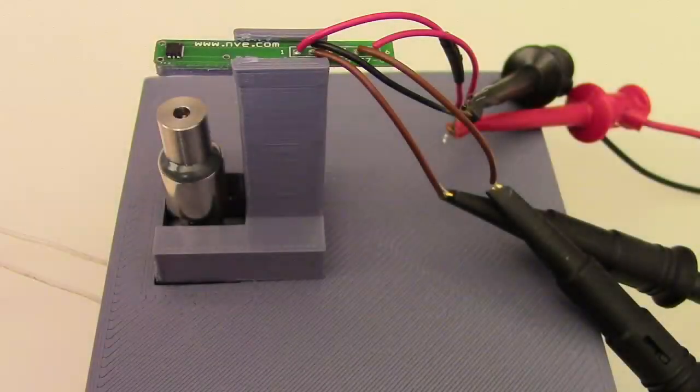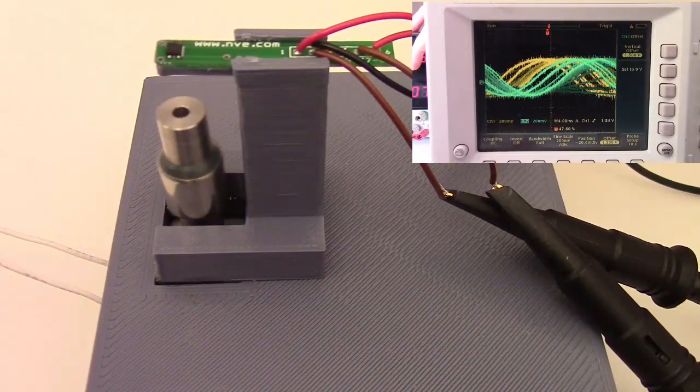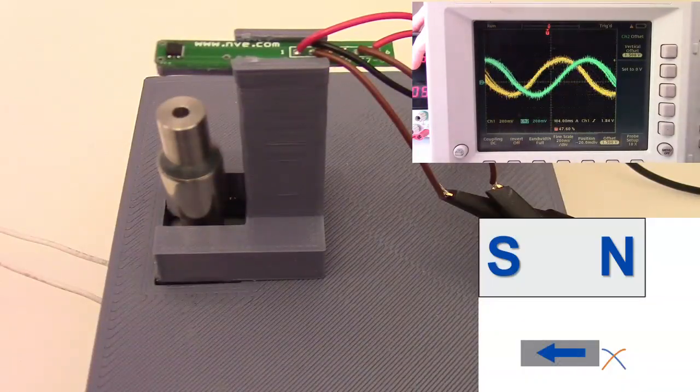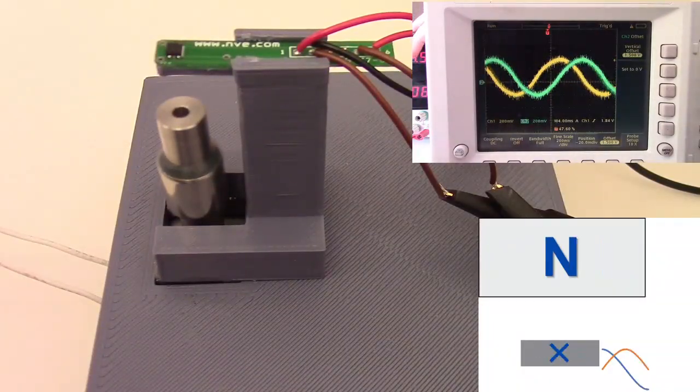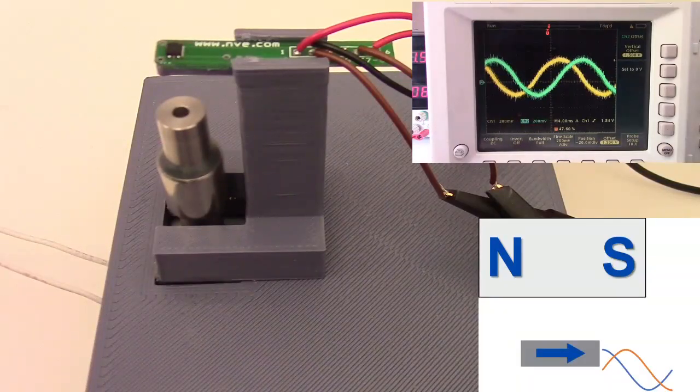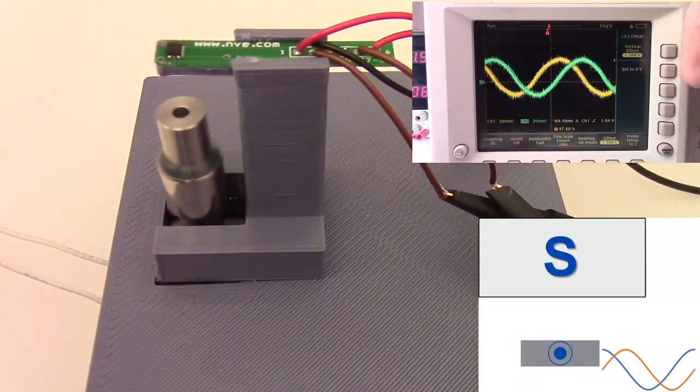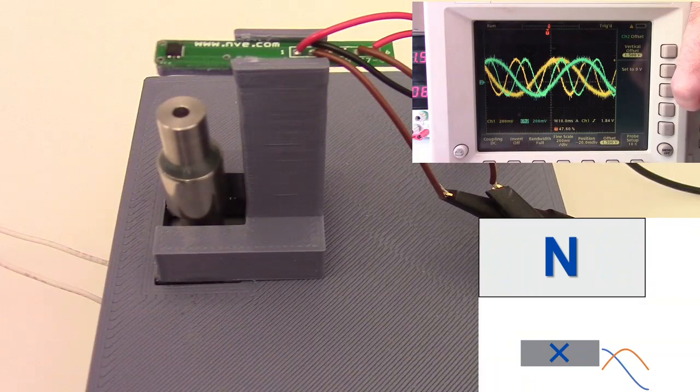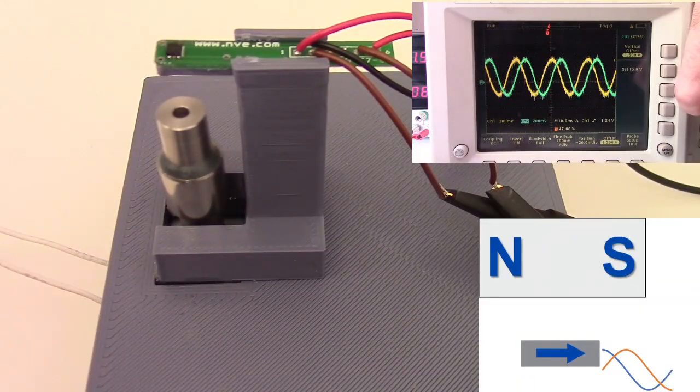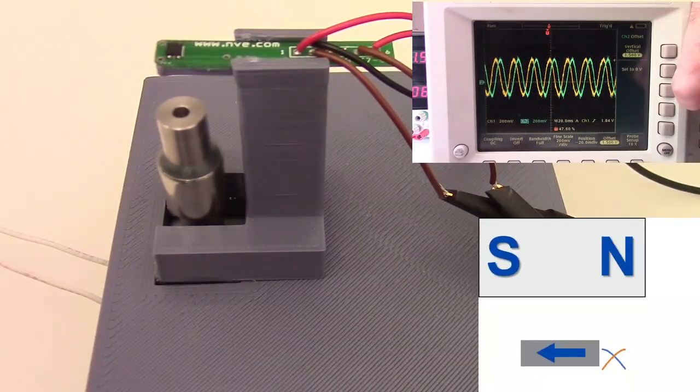We'll start with the sensor on the rotational axis in the standard configuration. The magnet is diametrically magnetized, so the magnetic field rotates with the magnet. The sensor reads the magnetic field's direction and produces sine and cosine outputs. You can see the sensor reads the angle accurately with low distortion.